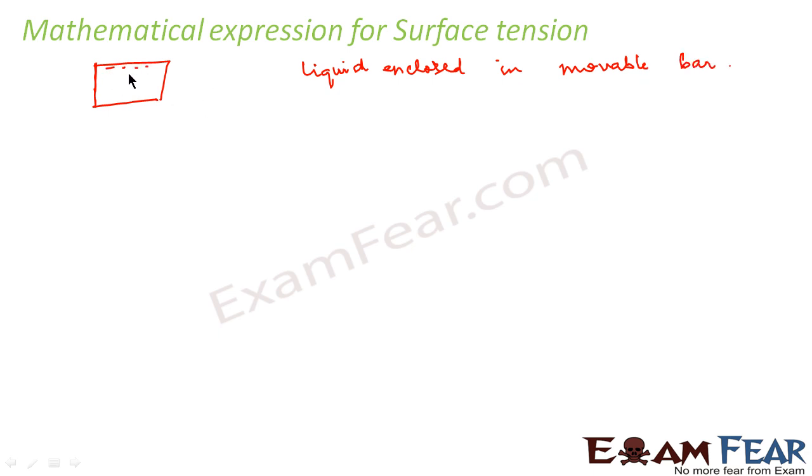Let us suppose a liquid is enclosed in this movable bar and now the slide or the bar is slightly displaced. We displace the slide till this point. It is slightly moved. Now we say that the slide is moved by some distance say D. So what would be the increase in area?